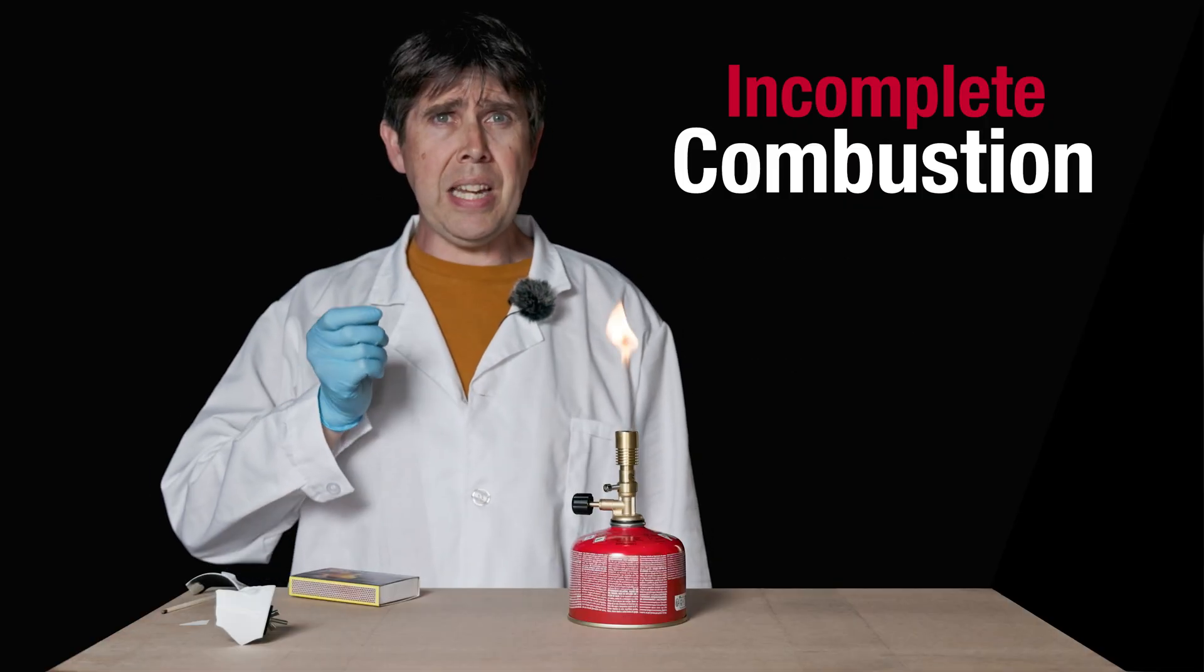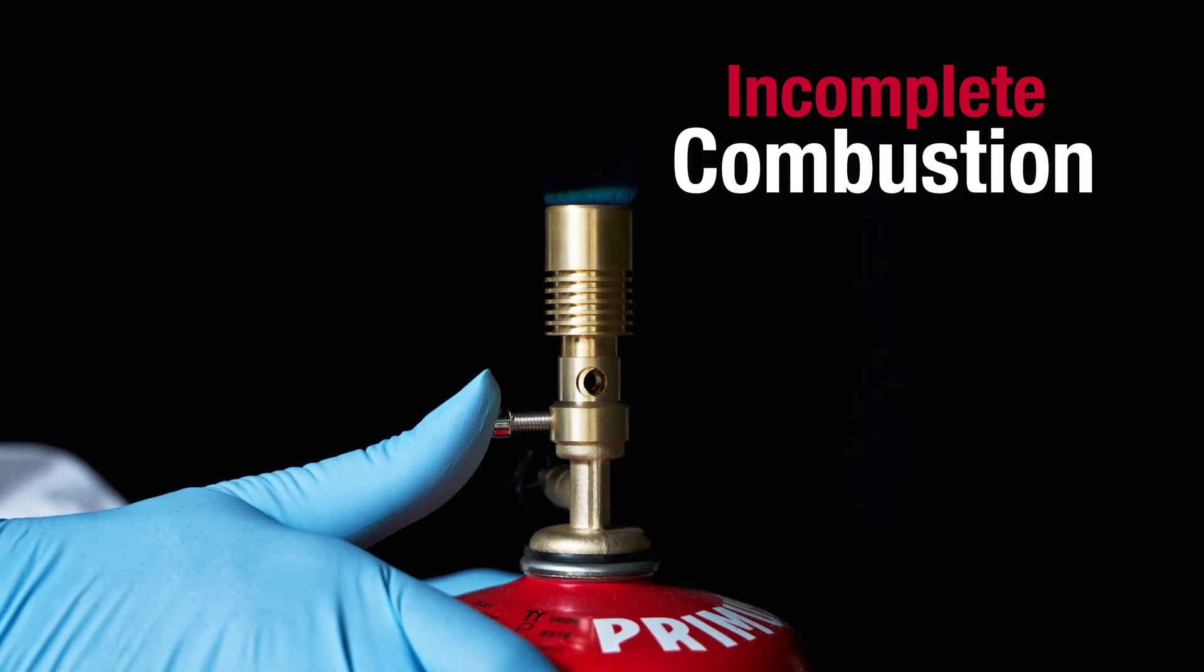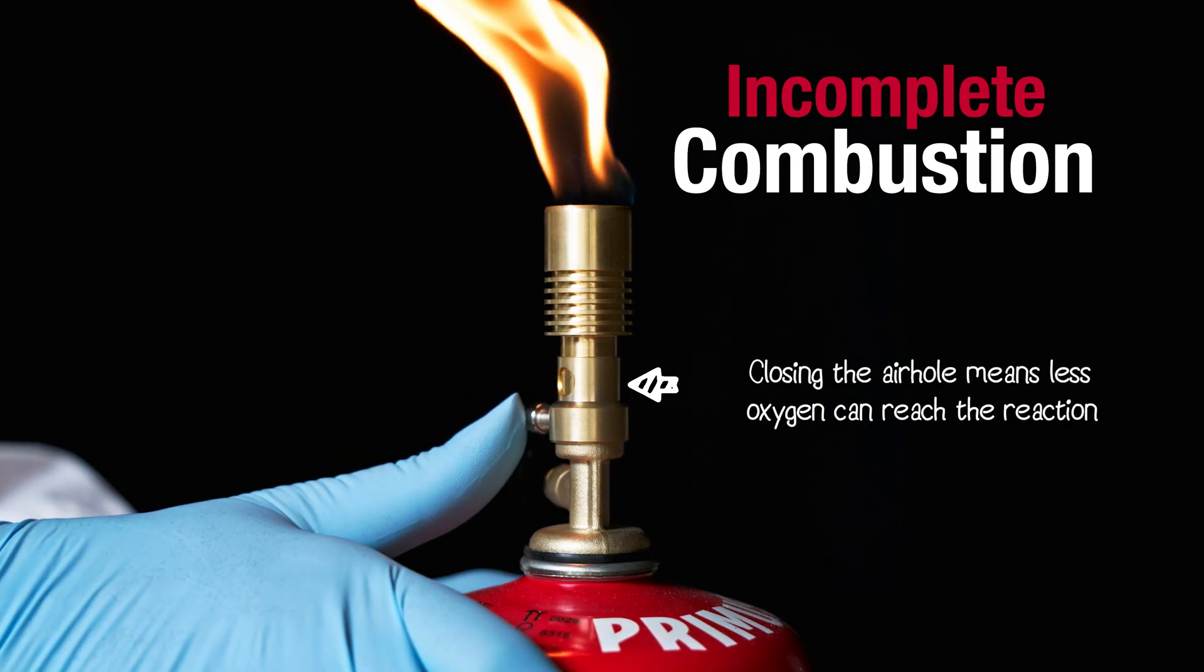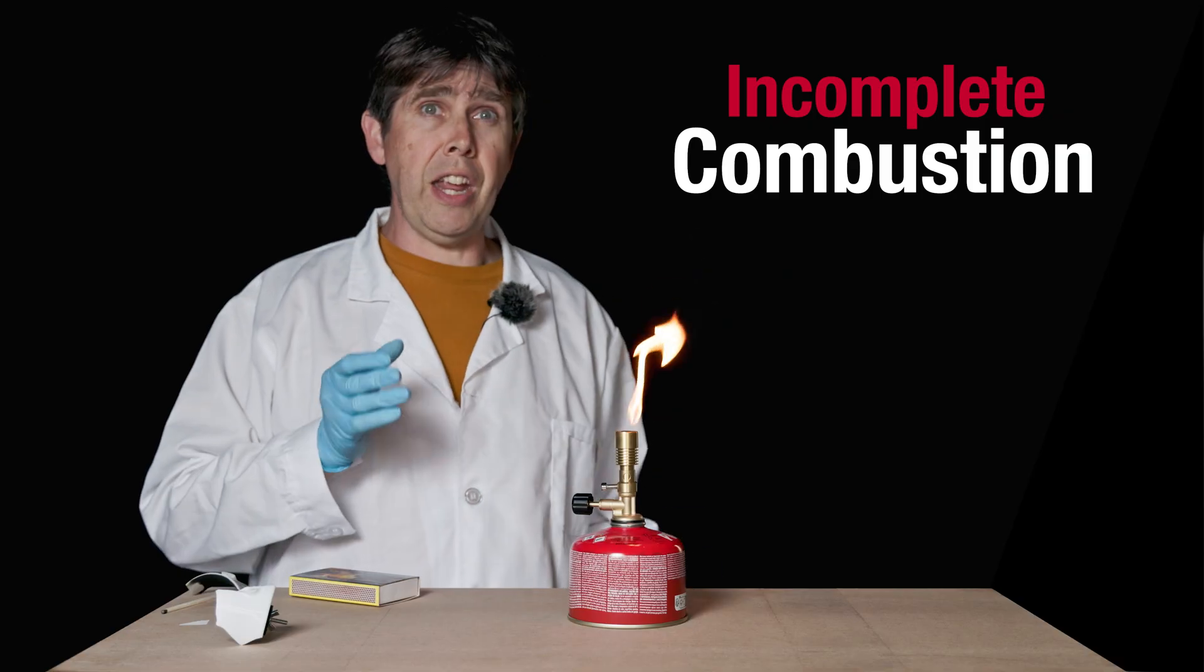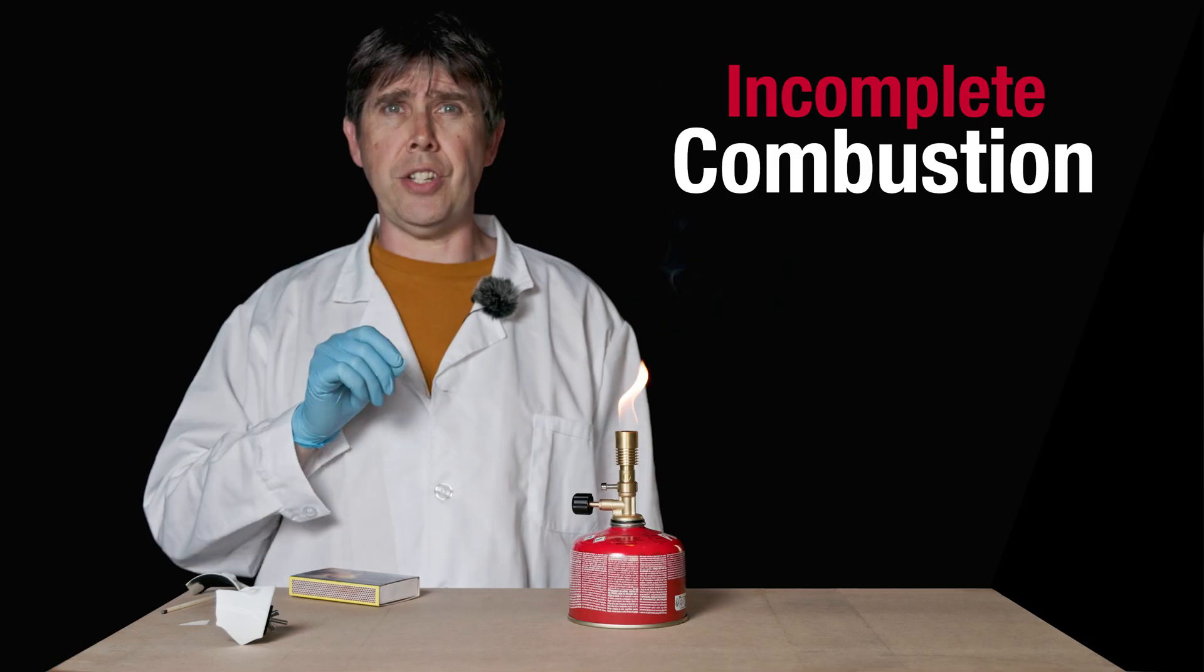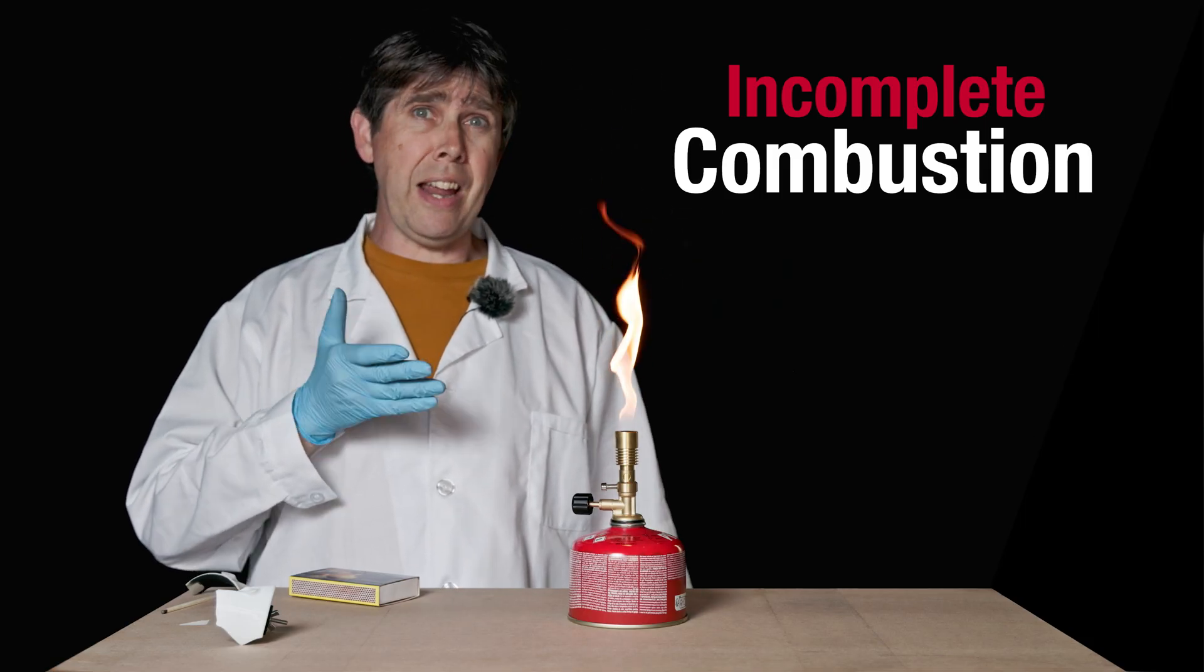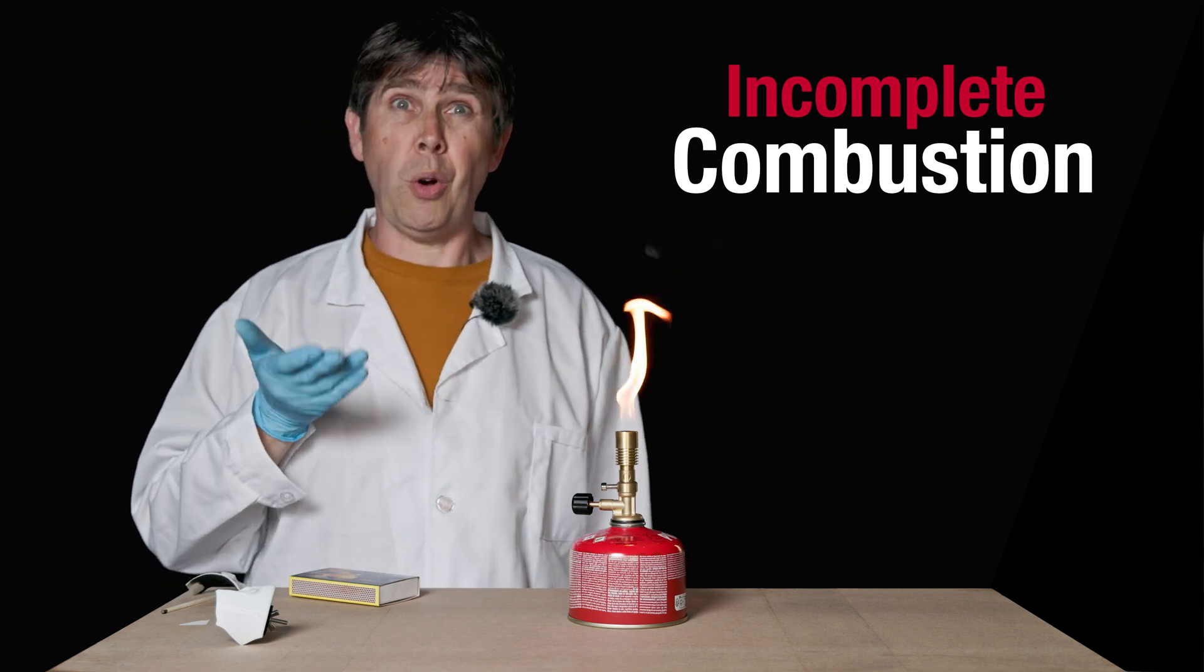If I set my Bunsen here to the yellow safety flame, I'm doing so by restricting the amount of oxygen that can get into the stream of gas. And so I change a very efficient reaction of almost complete combustion into a much less efficient one. The flame is safe in the sense that I can see it, so hopefully I'm not going to burn myself on it.